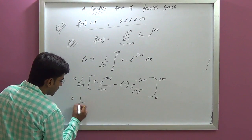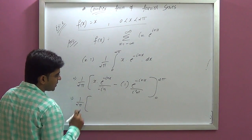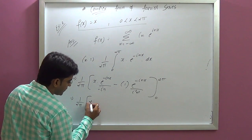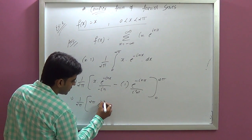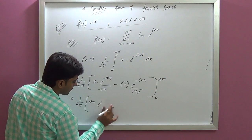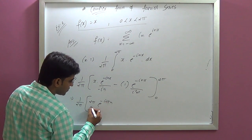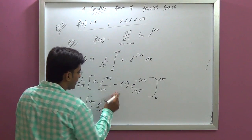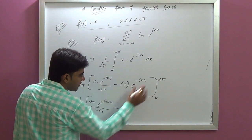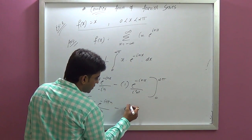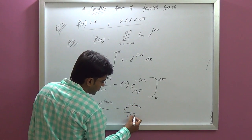Now apply the limit. We get 1 upon 2π. Applying the upper limit 2π: e raised to minus 2πin, that is e raised to i2πn. Look here — e raised to i2πn — upon minus in. Then applying the lower limit 0 to the terms.